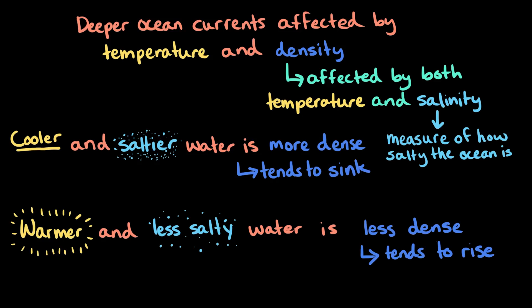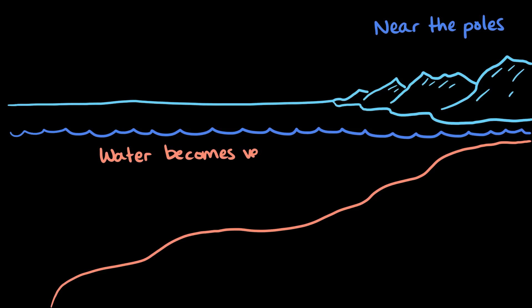So with these deeper ocean currents, water actually moves vertically, or up and down. For example, water near the poles gets very cold. It also gets very salty because when sea ice is formed, the salt can't go into the ice. Instead, the salt stays behind in the water, and so the water gets saltier, or more saline.